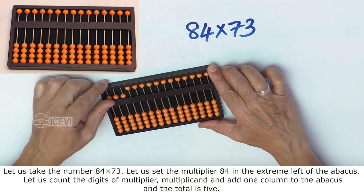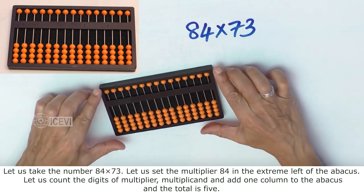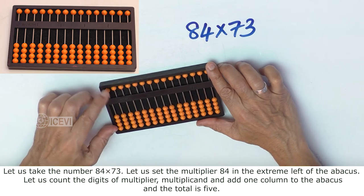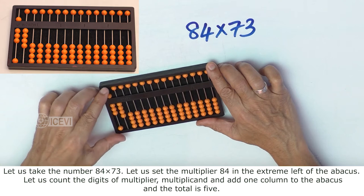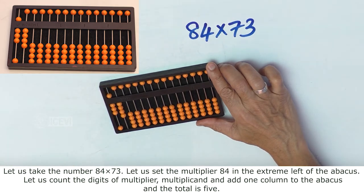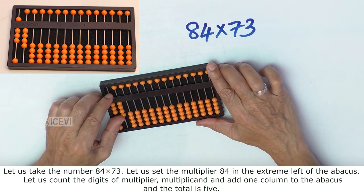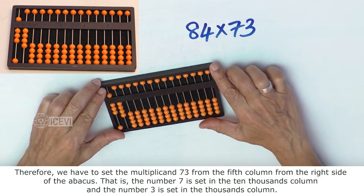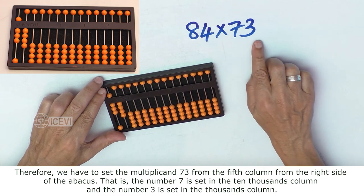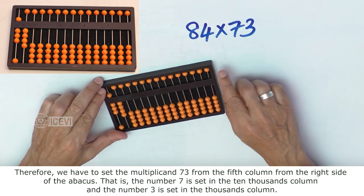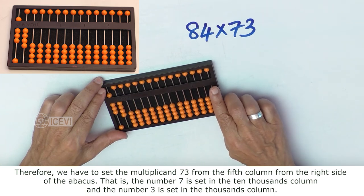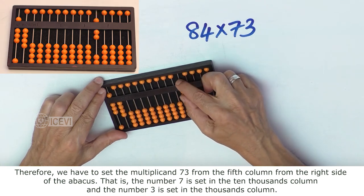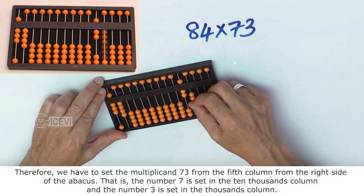Let us set the number 84 in the extreme left of the abacus. Let us count the digits of the multiplier, multiplicand and add one column to the abacus. The total becomes 5. Therefore we have to set the multiplicand 73 from the 5th column from the right side of the abacus. The number 7 is set in the 10,000th column and the number 3 is set in the 1,000th column.